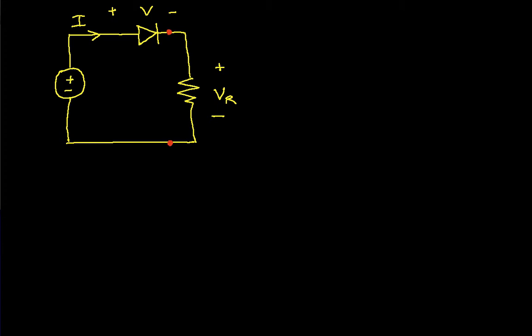Most of the time we're interested in the voltage across the resistor. But in order to do the analysis, we also need to know the voltage across the diode. So we're going to look at both of those. Let's call our source voltage V sub S, and for the sake of argument, let's suppose this resistor is a 1k ohm resistor. If we can find the current flowing around this circuit, we can find VR — it would be 1k ohm times the current.